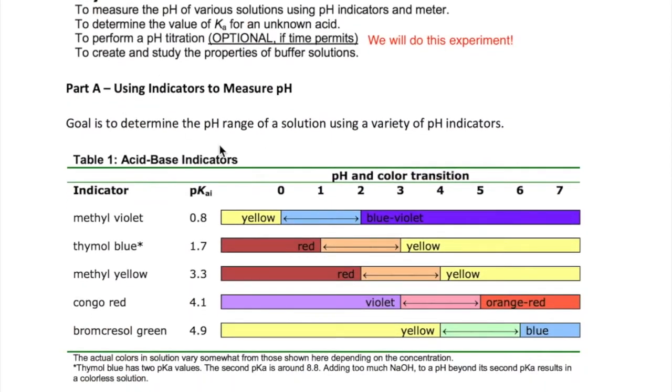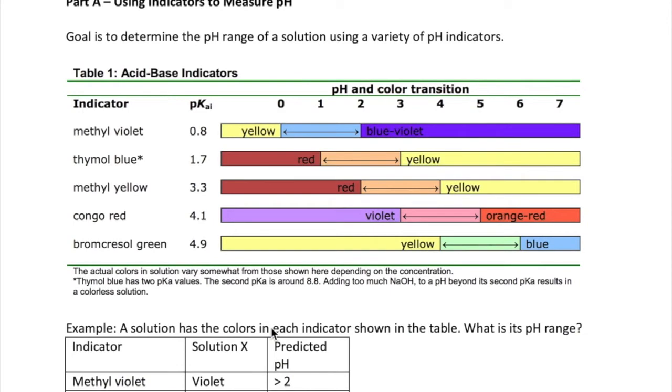So in part A, our goal is to determine the range of pH of a solution by using several pH indicators. The list of pH indicators are shown in the table below, which is taken from your lab procedure.